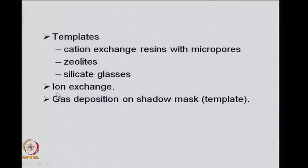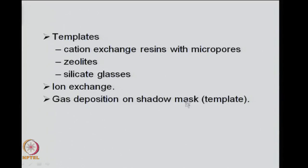You can use ion exchange techniques. You have a template in which there is a particular ion in the material, and then you ion exchange with another ion, and now you get a new material with the same structure as the initial template material, because only one ion or one set of ions have been exchanged. You can also use gas deposition on a shadow mask — the shadow mask here will act as the template, and the ordering of the gas molecules on this mask will give you the structure you need.